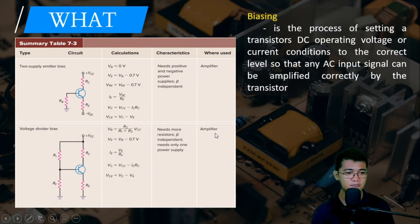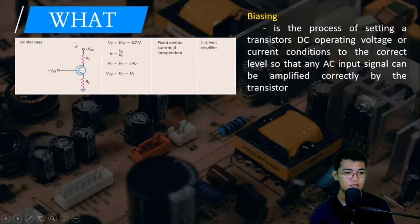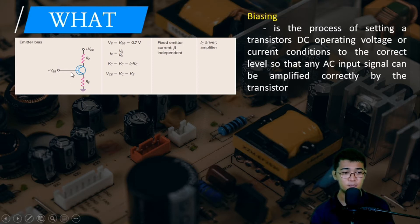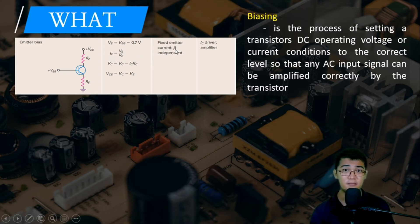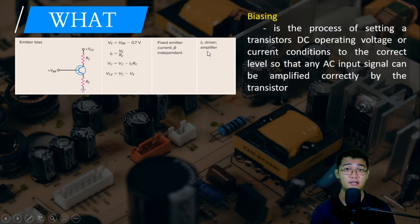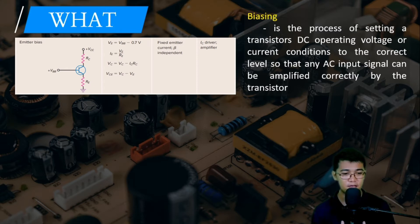The third configuration is the emitter bias. It has two resistors — a collector resistor and an emitter resistor — and two supplies: VBB to the base and VCC to the collector. It has a fixed emitter current, is beta-independent, functions as an IC driver, and is also used as an amplifier.